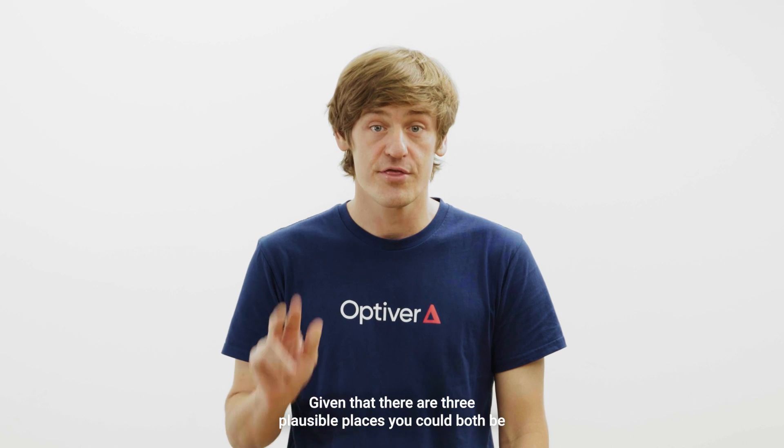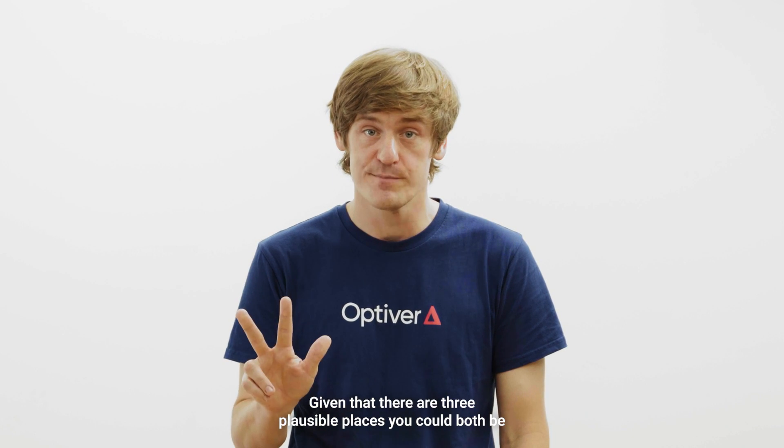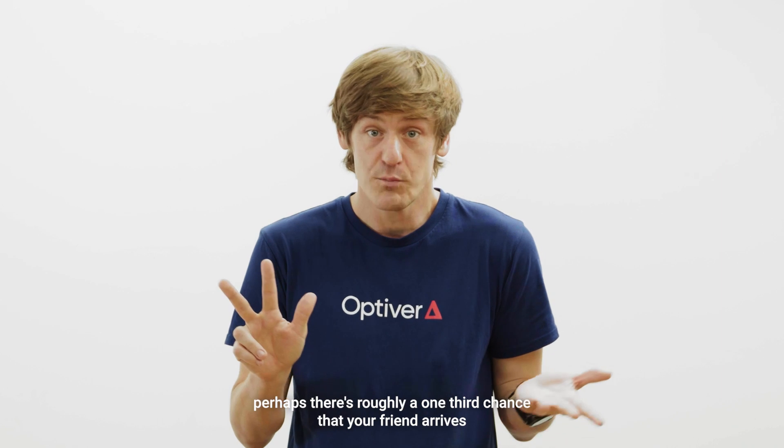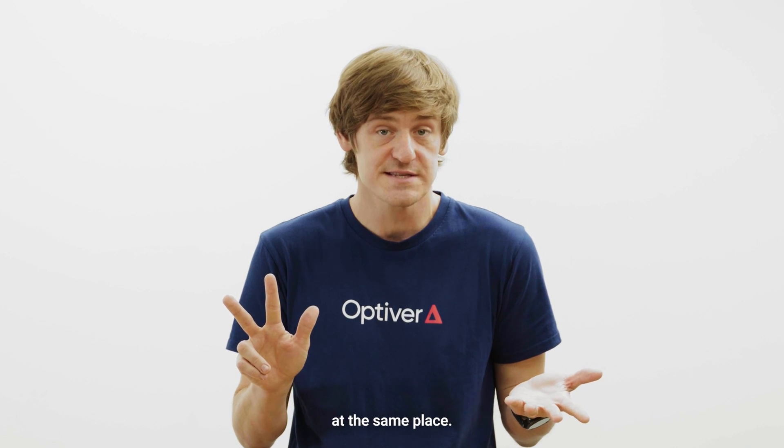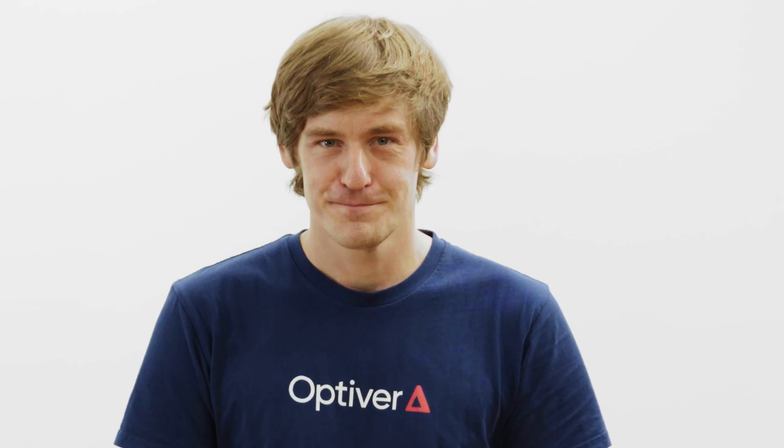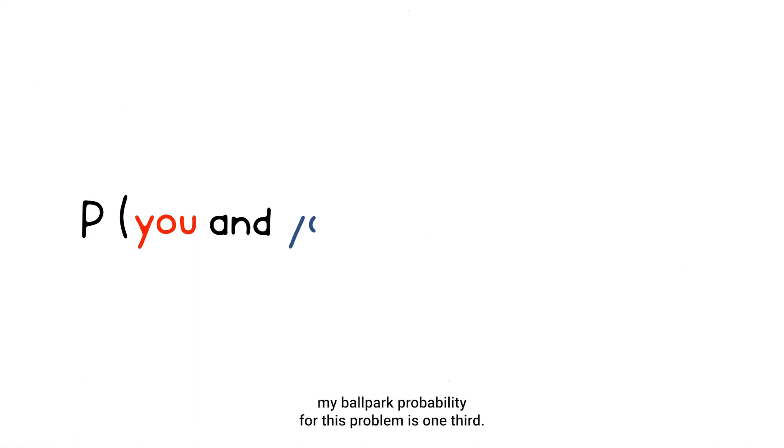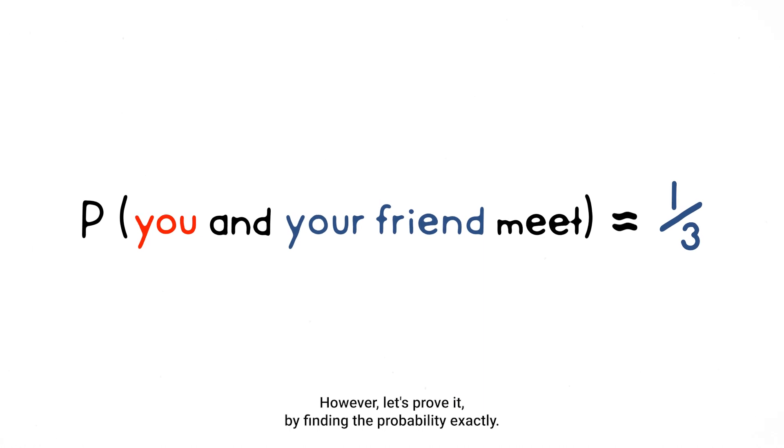So it should be clear that B, C, and D are the more likely meeting places. Given that there are three plausible places you could both be halfway through the walk, perhaps there's roughly a one-third chance that your friend arrives at the same place. With a good amount of hand-waving, my ballpark probability for this problem is one-third. I think it's more likely that you miss each other. However, let's prove it by finding the probability exactly.